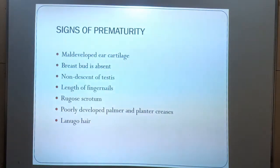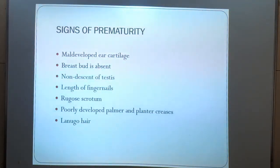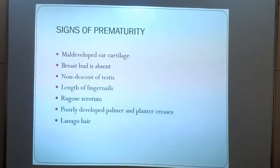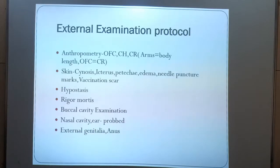What are the signs of prematurity? Maldeveloped ear cartilage, breast bud is absent, non-descent of the testes, length of fingernails, rugose scrotum, lanugo hair, and poorly developed palmar and plantar creases.